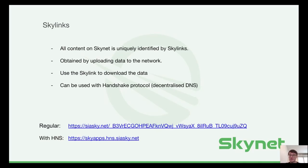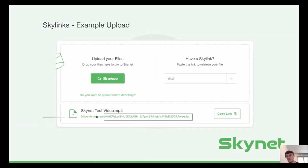Since Skylinks can also be a bit hard to read, we integrated the Handshake protocol, or HNS for short. HNS is a decentralized name service. You can see the difference between downloading a regular Skylink and one using HNS. Both of them use siasky.net, which is the public portal hosted by Skynet Labs. If you want to try it out right away, just head over to siasky.net, where you will see a simple interface where you can browse for a file or folder and upload it. Then you get the Skylink and can share it with anybody.